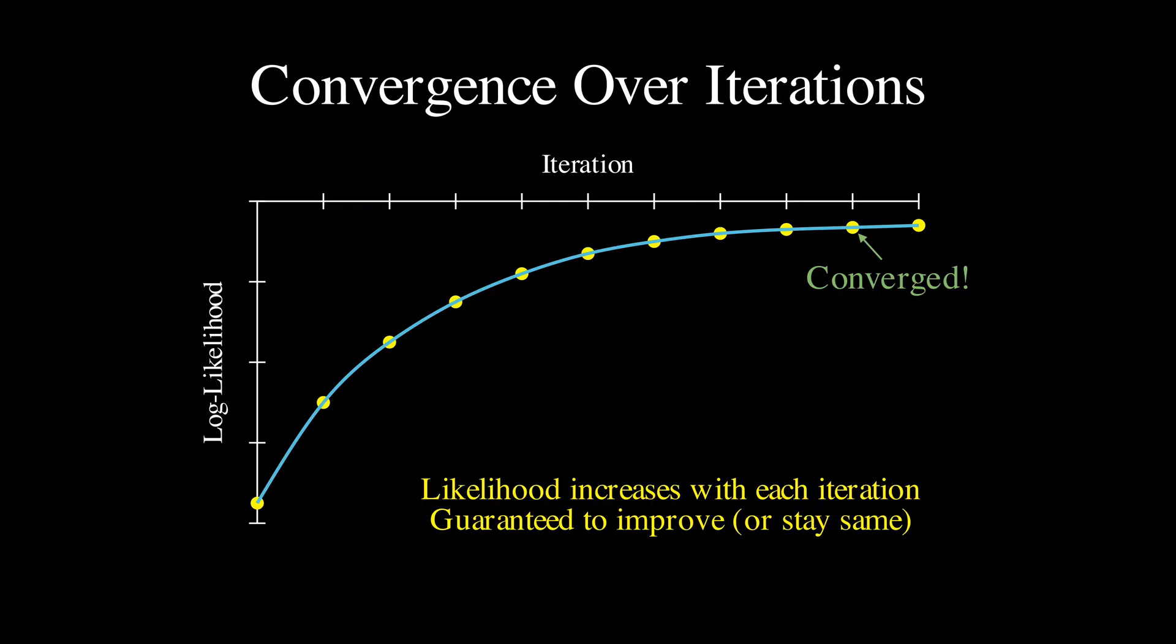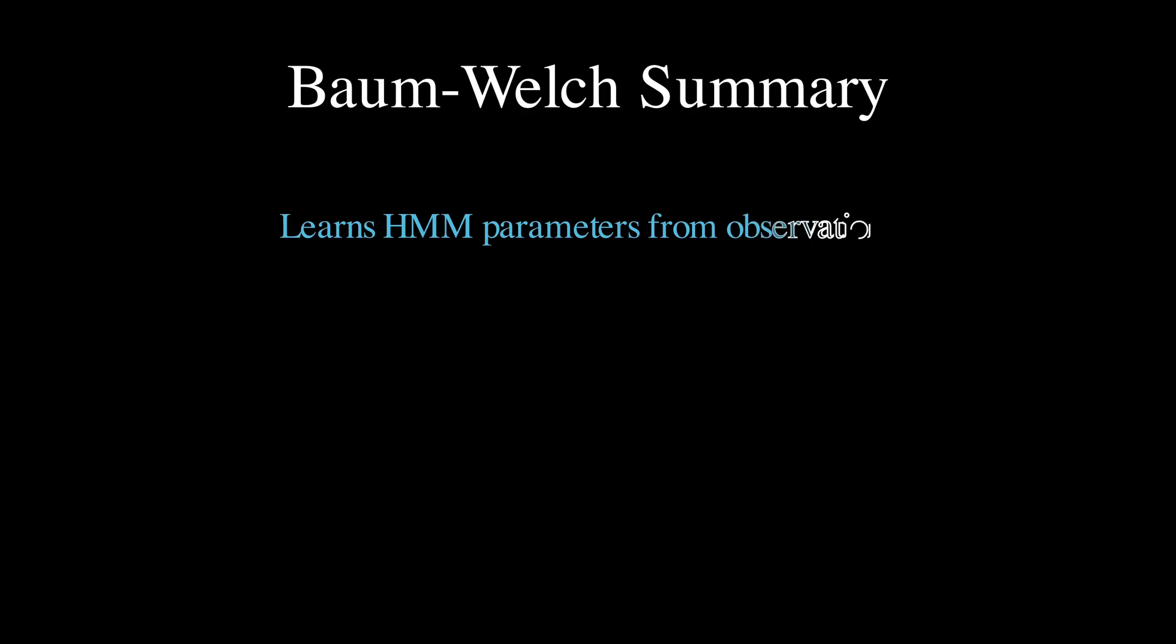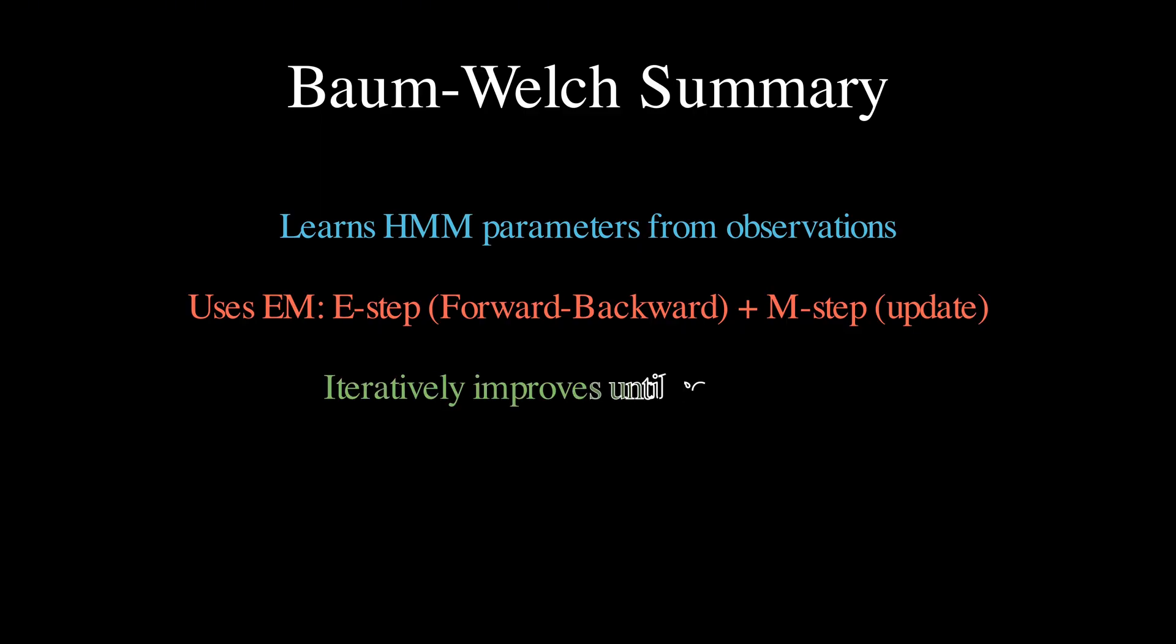So, to recap, the Baum-Welch algorithm learns hidden Markov model parameters from observation sequences using an iterative process that alternates between estimating hidden states with forward-backward and updating parameters to better explain the data. This process continues until convergence, giving us a trained model that captures the underlying patterns in our data.